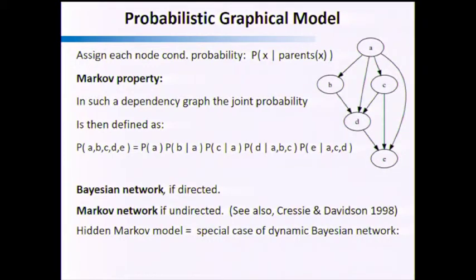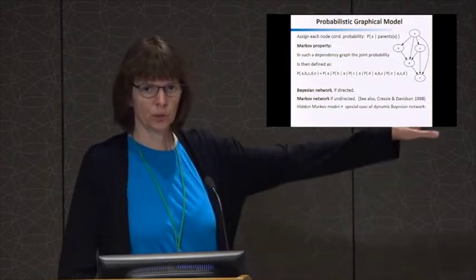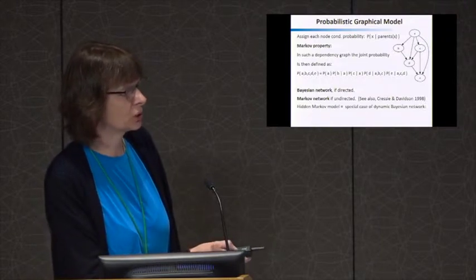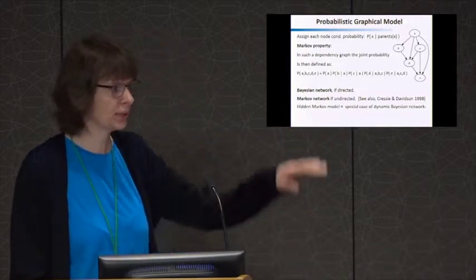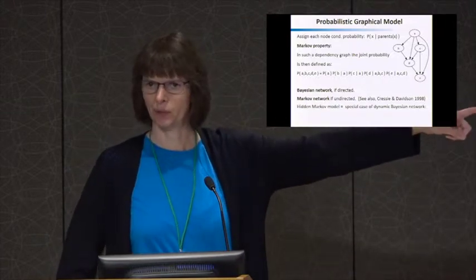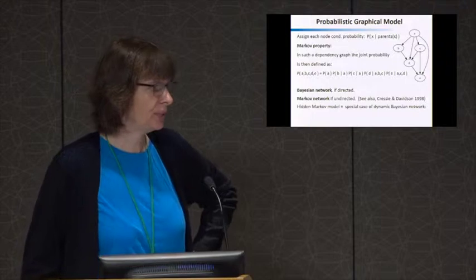The beauty of this is that it's the simplest representation to capture the whole joint probability. If I want the joint probability p(a,b,c,d,e), I only multiply the individual probabilities from the different nodes — p(a) times p(b|a), and so forth. This encodes the sparsity of the whole system in the graph. I only need to look at the graph to figure out which variables are related to which ones. For vocabulary: if my original graph is directed and I have these conditional probabilities, I call it a Bayesian network. If it's undirected I call it a Markov network. Hidden Markov models are just a special case of dynamic Bayesian networks.